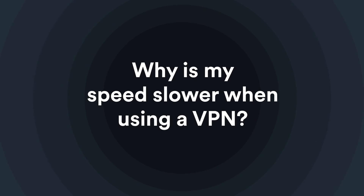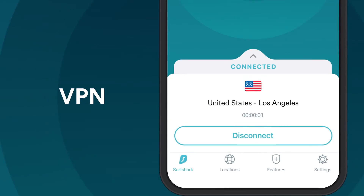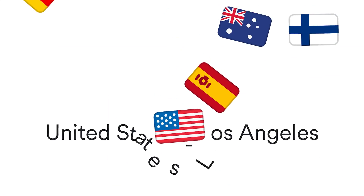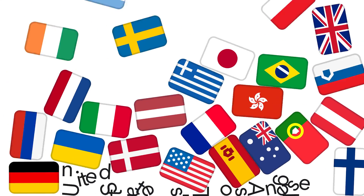Why is my speed slower when using a VPN? Internet speed will always take a minor hit when using a VPN, because a VPN encrypts your internet traffic with advanced encryption methods. In addition, your connection has to travel a bit further to reach its destination, depending on the VPN server that you're using. All of this is to ensure your privacy online. If you're looking to increase your speed while using a VPN, click on this card here.